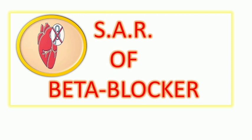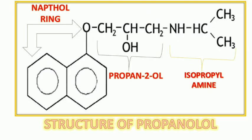We are going to discuss the structural activity relationship (SAR) of beta blockers. First, let's discuss the structure briefly. Propranolol, being the prototype drug of beta blockers, is basically propane-2-ol with two substitutions: first, a naphthalene ring with an alcoholic group at the alpha position, and second, an isopropylamine chain at the first position.